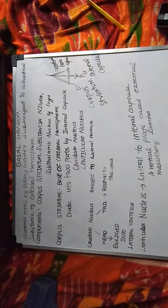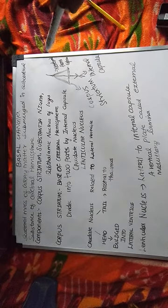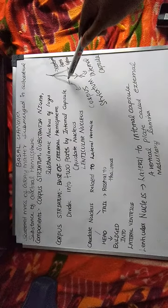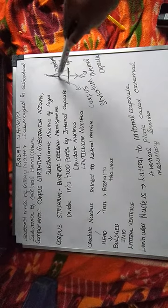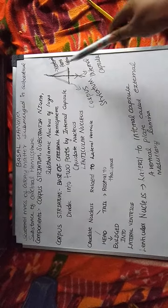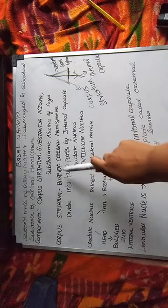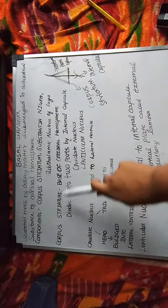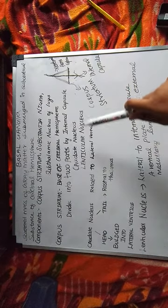Now let's look at the first one — Corpus Striatum. So let's look at this; it is like a triangle. We have the internal capsule, which is called the Corpus Striatum. This is the base of the cerebral hemisphere. It is divided into two parts by the internal capsule: one is the Caudate Nucleus and the other is the Lenticular Nucleus.